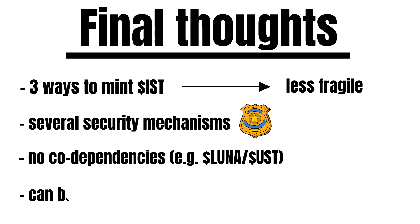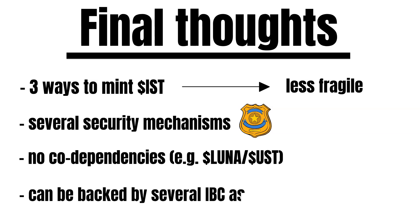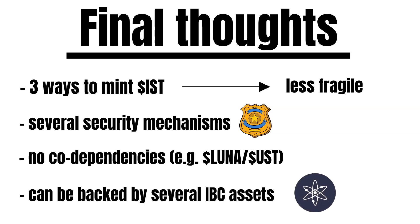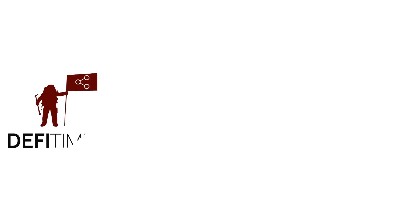Finally, we must see a stablecoin that can be backed by IBC assets such as ATOM. ETH is also considered sound money because it backs DAI, the most dominant stablecoin in the Ethereum ecosystem. With IST, the interchain could also get its own stablecoin, strengthening the tokenomics of several Cosmos coins. And with the help of IBC and bridges, we could see IST all over the crypto industry. This is why we at DeFi Times are very excited about the launch and hope to see IST succeeding.